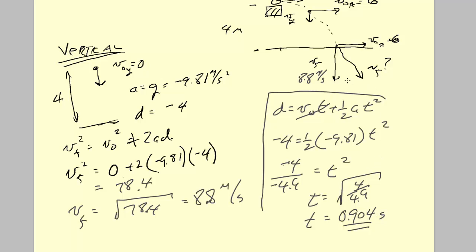Since we've calculated the final vertical velocity, we're in a position to calculate the actual final velocity — the speed when it hits the ground and the angle of elevation, sometimes called the angle of depression because we've rotated below the horizon.